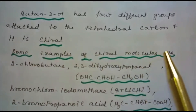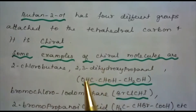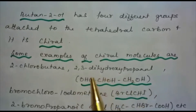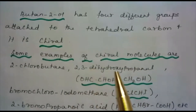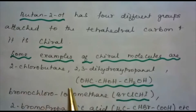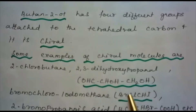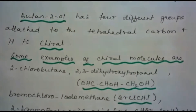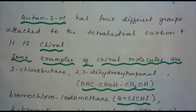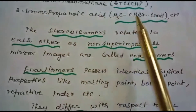Some examples of chiral molecules include: 2-chlorobutane; 2,3-dihydroxypropanol with the formula CHO–CHOH–CH₂OH, which has three carbon atoms; bromo-chloro-iodo-methane (BrClCHI), where three hydrogen atoms of methane are replaced by one bromine atom, one chlorine atom, and one iodine atom; and 2-bromopropanoic acid with the formula CH₃–CHBr–COOH.